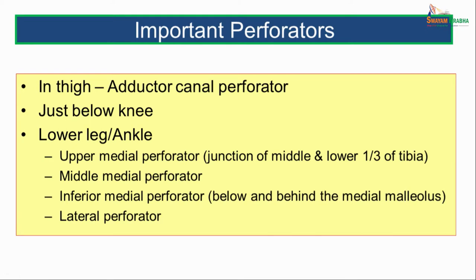The important perforator veins: in the thigh, we have the adductor canal perforator or the Hunterian perforator. Just below the knee, we have perforators. At the lower leg or ankle, the perforators include the upper medial perforator, which lies at the junction of the middle and lower one third of the tibia, the middle medial perforator, which lies midway between the upper medial and inferior medial perforators, and a lateral or fibular perforator.